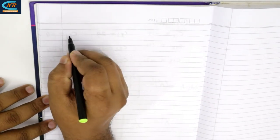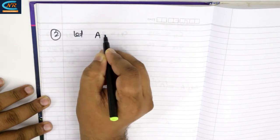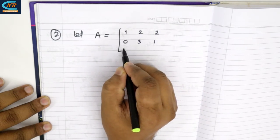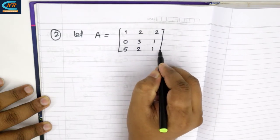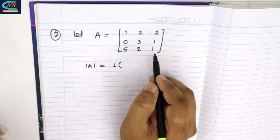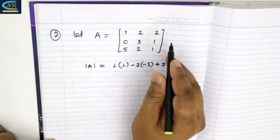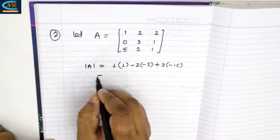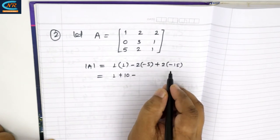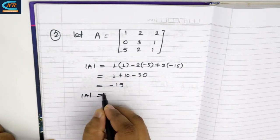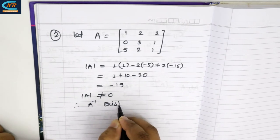Let's solve another example. Let A equal to 1, 2, 2, 0, 3, 1, 5, 2, 1. Now let's find the determinant of A. Determinant equals 1 into (3 minus 2) minus 2 into (0 minus 5) plus 2 into (0 minus 15), which gives 1 plus 10 minus 30, which equals minus 19. The determinant of A is not equal to 0. Therefore A inverse exists because it is a non-singular matrix.